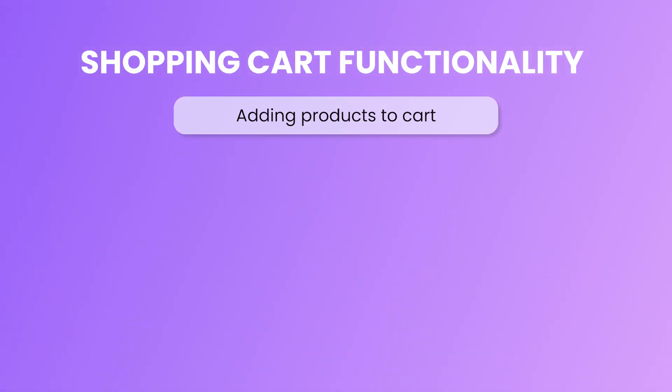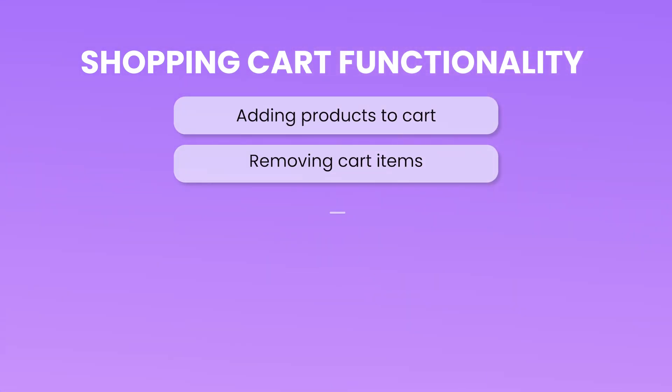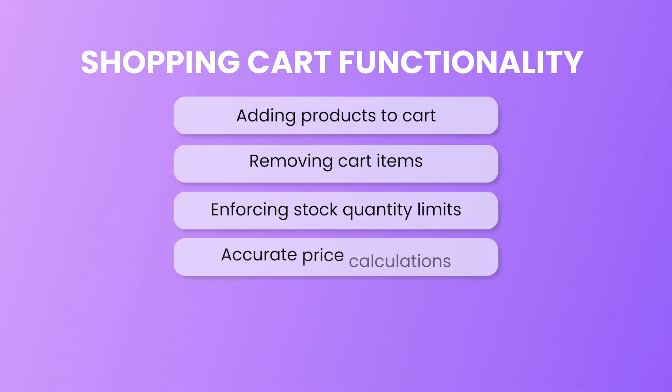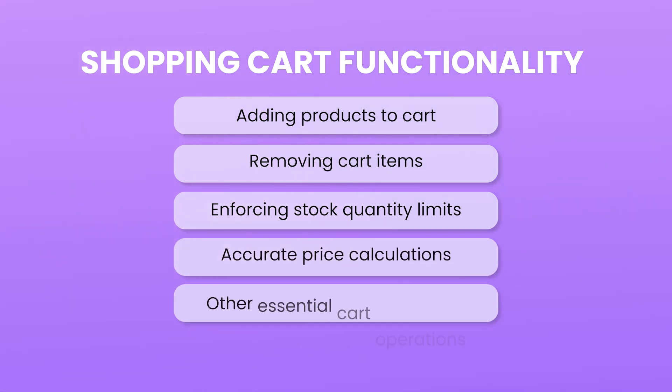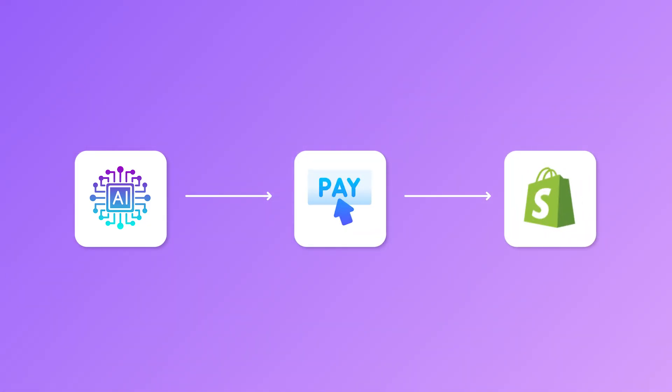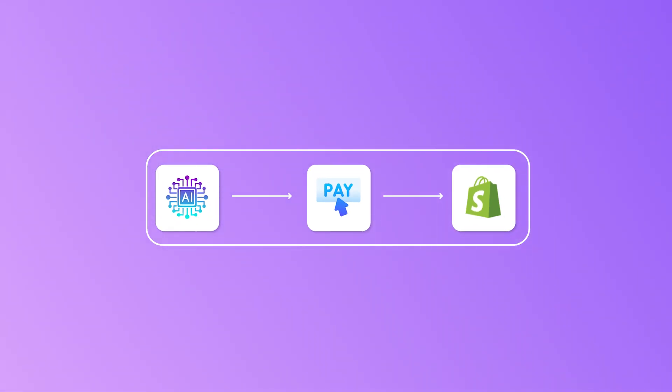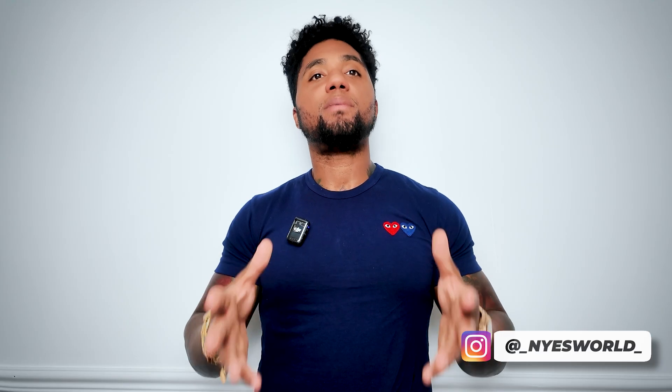Begin by implementing the shopping cart functionality within the web project, ensuring all features operate correctly — including adding products to cart, removing cart items, enforcing stock quantity limits, accurate price calculations, and other essential cart operations. Within the shopping cart interface, instruct the AI by saying 'When the payment button is clicked, connect to my Shopify payment page.' The AI will then generate the appropriate payment integration. Upon completion, thoroughly test the entire payment workflow to verify products can be purchased without any issues.